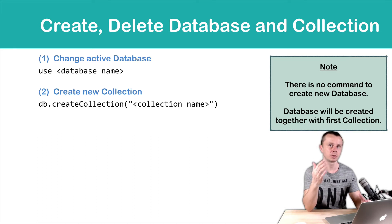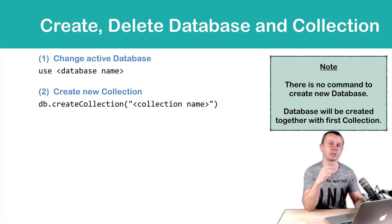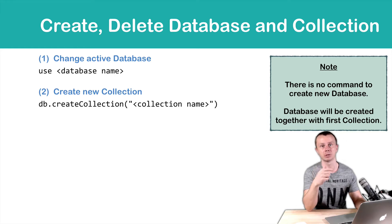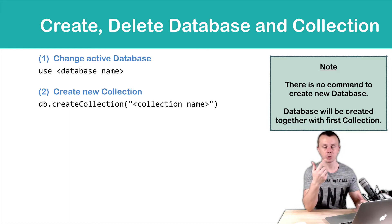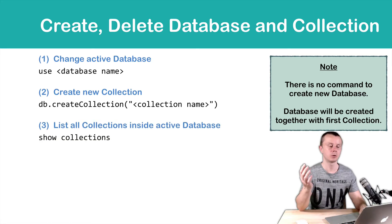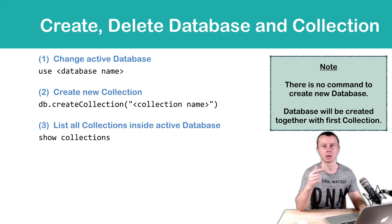In order to create a new collection, just use the createCollection method of the DB object. Type DB dot createCollection and pass an argument to this method. The argument will be a string with the name of the new collection. Then using the show collections command, you can verify that the collection was created.